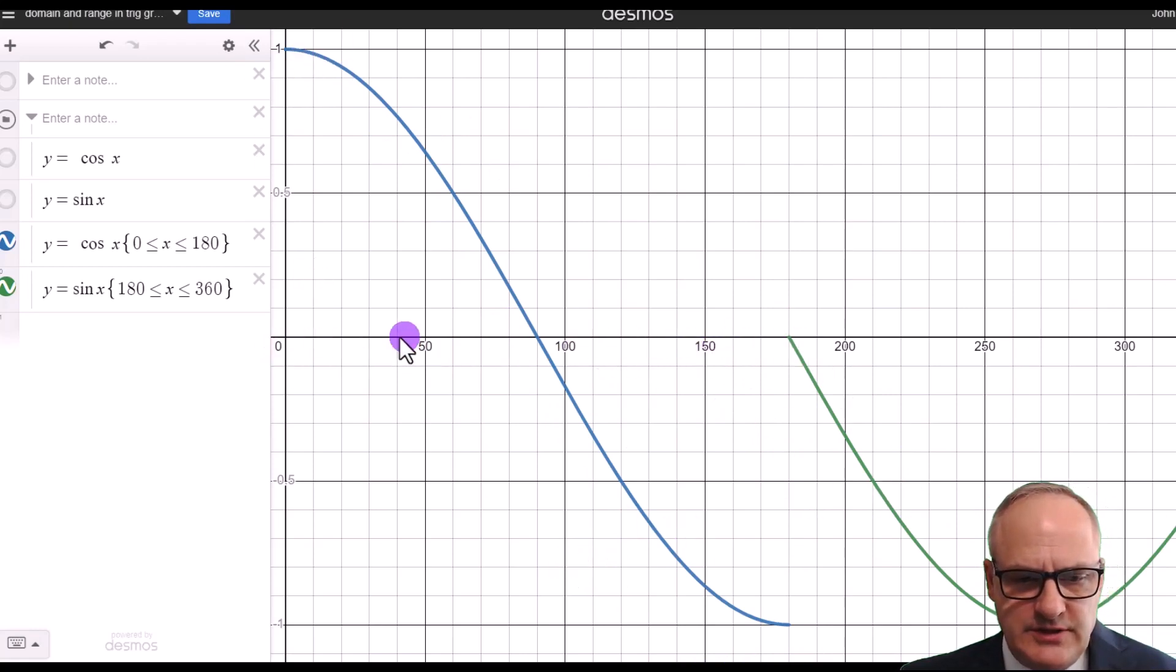And the domain is what you put in, so these are the x values. And the range is what's come out. So the range is between 1 and minus 1 for the cos curve here. And for the sine curve, the range is going to be between 0 and minus 1 between 180 and 360.